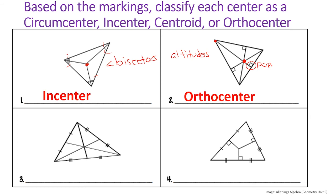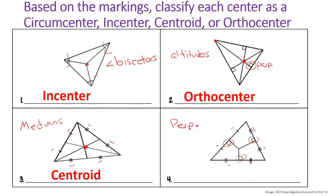Next, we have lines that cut each side into two equal parts — those are medians, and the point of concurrency for medians is the centroid. Last, we have right angles and each side cut into two equal parts, which means these are perpendicular bisectors. The point of concurrency for perpendicular bisectors is the circumcenter.